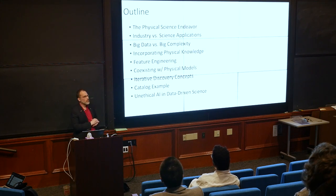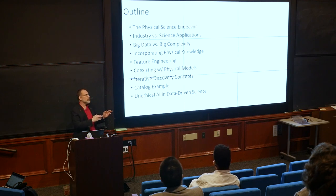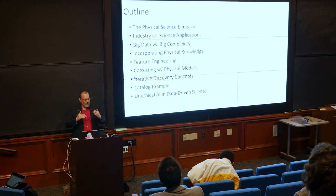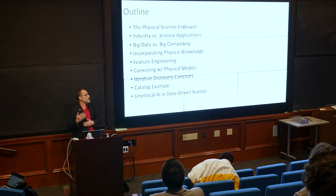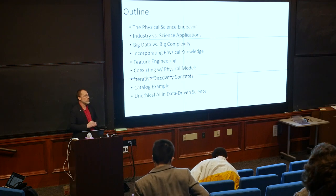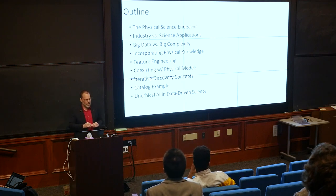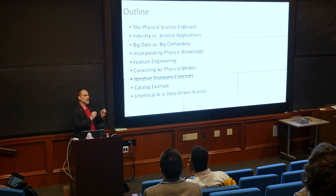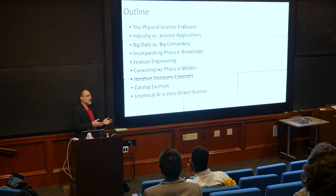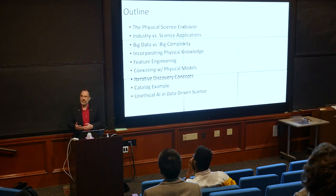Here's the outline: I'll describe what the physical science endeavor really is and how technology helps it go forward. I'll compare what's going on in industry versus science applications. I'll talk about the difference between big data — which you hear about in the news — and big complexity, which is when you're looking at data with extremely sophisticated content, multiple overlapping datasets, and very high dimensionality. I'll also cover how to incorporate physical knowledge into machine learning — a big difference from industry — where we know underlying physical rules and shouldn't ignore them.